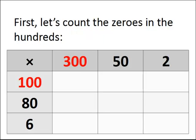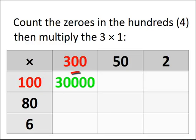First, let's count the zeros in the hundreds. As you can see, there are two zeros in the 300, and two more zeros in the 100 gives you four zeros. Then you multiply the three by the one, gives you three. So it's three, followed by four zeros, 30,000.